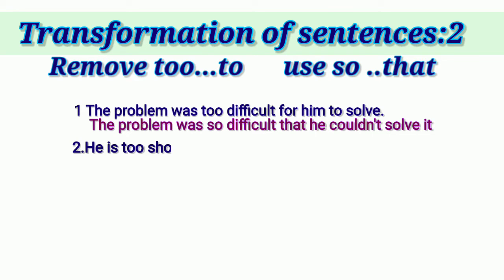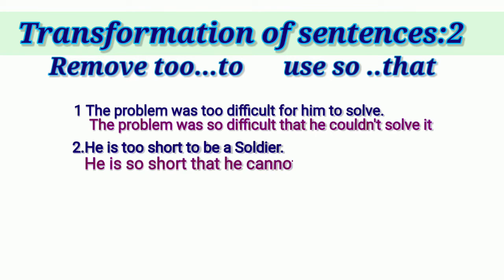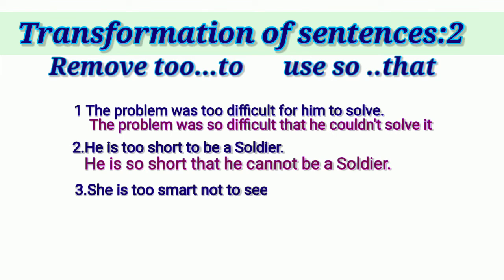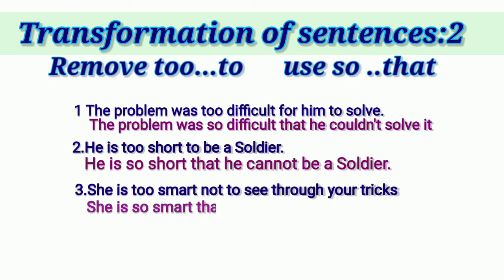Next: 'He is too short to be a soldier.' Answer: 'He is so short that he cannot be a soldier.' Sentence is in present tense, so 'cannot.' Subject is 'he,' so it appears in both places. Next: 'She is too smart not to see through your tricks.' This sentence is negative, so it changes to affirmative. 'Not see through your tricks' changes to 'will or can see through your tricks.' Answer: 'She is so smart that she can see through your tricks.'